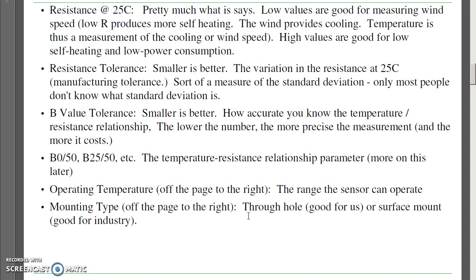The B-value tolerance, the B-value is a parameter that tells you the resistance versus temperature. Again, the smaller is better. The B0/50, B25/50 is the temperature resistance relationship. That's the number we're really looking for. The operating temperature is kind of self-explanatory. It's the range the temperature sensor works at. And the mounting type tells you what the package is. Through hole is good for us. Surface mount is nice for industry.